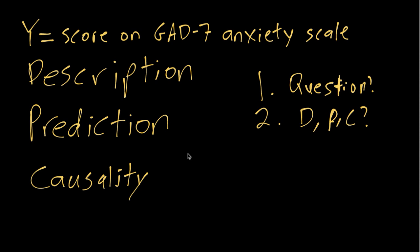if it's prediction, thinking about your loss function more carefully, if it's causality, thinking about other things more carefully that we'll get into later. So that would be my suggestion for where to start in understanding this description, prediction, causality difference.